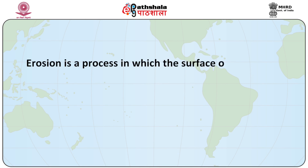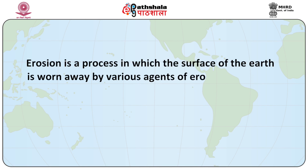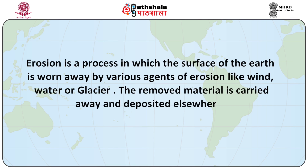Erosion is a process in which the surface of the earth is worn away by various agents of erosion like wind, water or glacier. The removed material is carried away and deposited elsewhere. Erosion by streams occurs through several processes going together. These processes are abrasion, hydraulic action, solution and attrition.